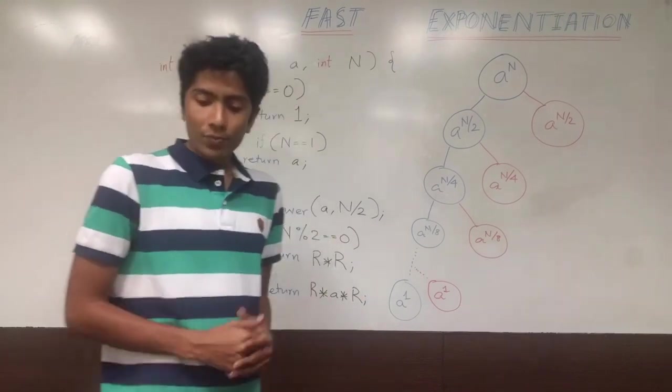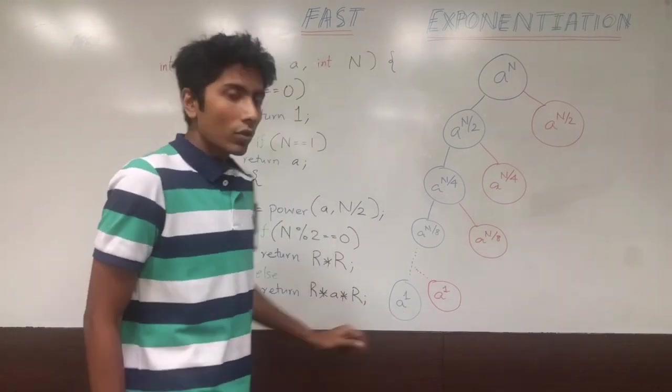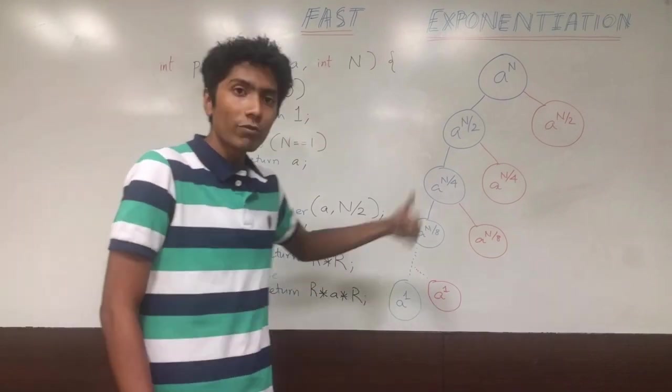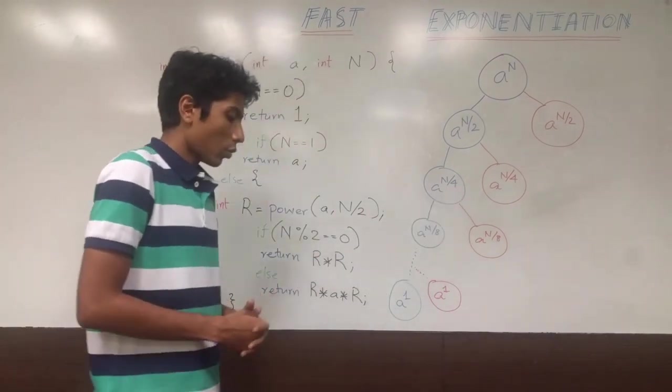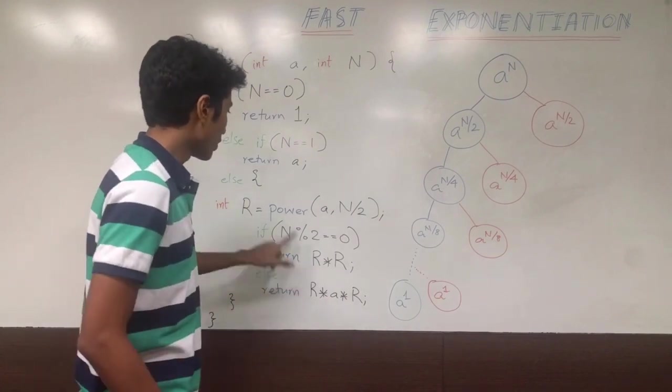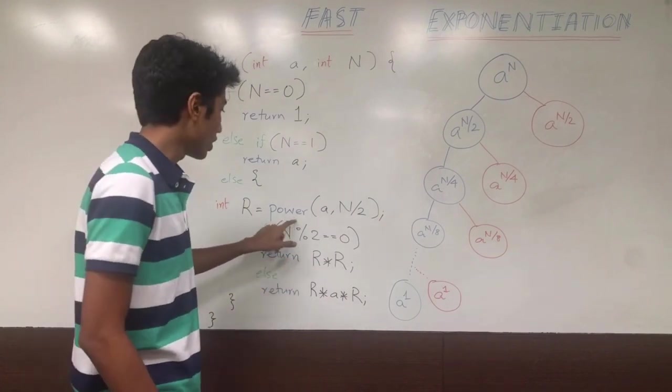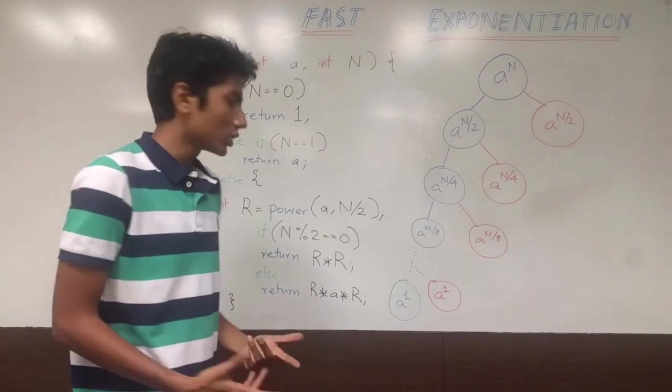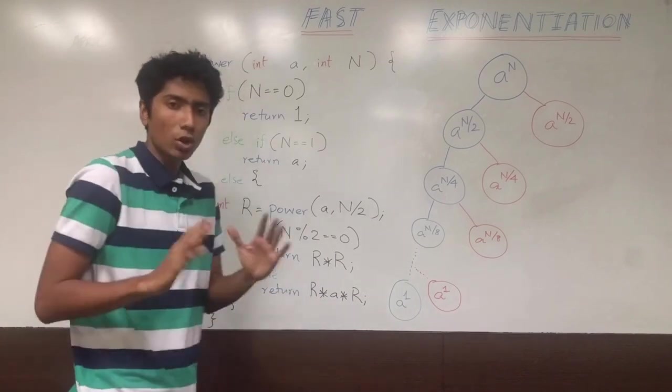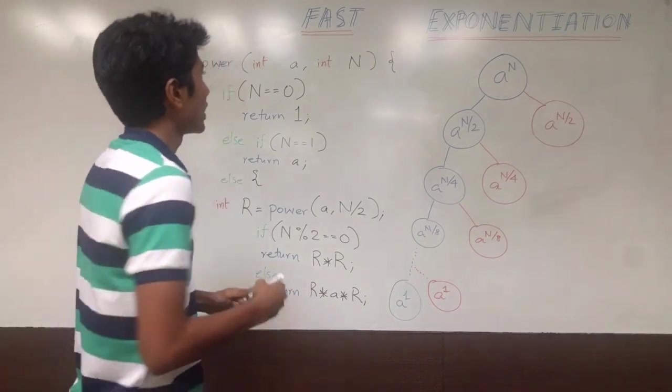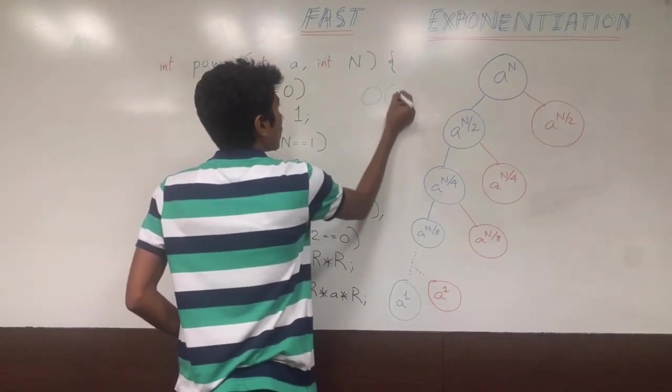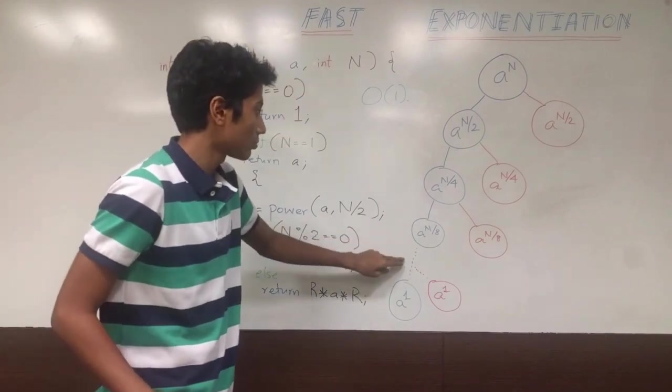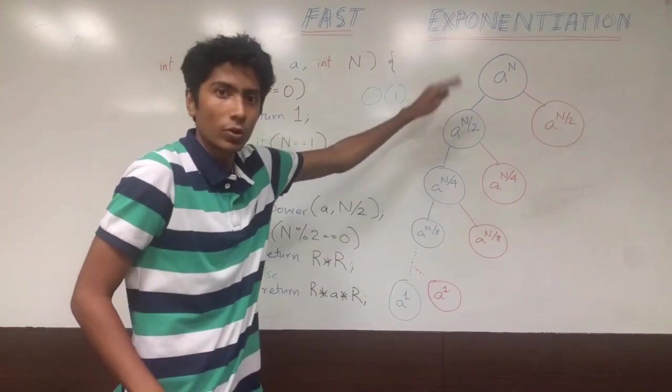So what do we have? a raised to power 1 will give us a base condition, return a, and that time we will return to the parent. When you are at parent, you come here, this has now been computed, and you come here or here, you do a single computation, a single multiplication, which is constant multiplication basically. So that is order 1, to return your result to your own parent, which is somewhere over here, and so on and so forth.